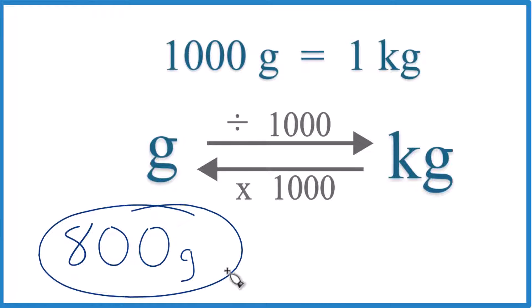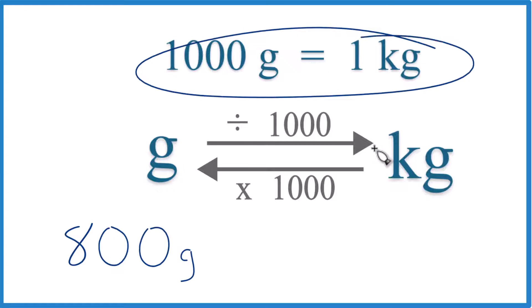If you have 800 grams and you want to get that to kilograms, here's how you can do it. You need to memorize that 1,000 grams equals one kilogram, and that's what we call our conversion factor.